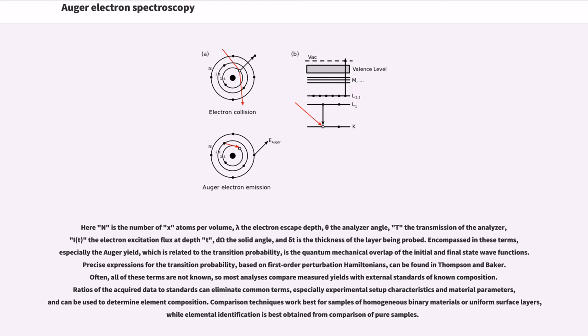Thus the total yield can be written as I = nλσa_A(cos θ/cos α)t(Ω)I_t(t)δt∫dΩ. Here n is the number of atoms per volume, lambda the electron escape depth, theta the analyzer angle, t the transmission of the analyzer, I_t the electron excitation flux at depth t, dΩ the solid angle, and δt is the thickness of the layer being probed. Encompassed in these terms, especially the Auger yield, which is related to the transition probability, is the quantum mechanical overlap of the initial and final state wave functions. Precise expressions for the transition probability, based on first-order perturbation Hamiltonians, can be found in Thompson and Baker. Often, all of these terms are not known, so most analyses compare measured yields with external standards of known composition. Ratios of the acquired data to standards can eliminate common terms, especially experimental setup characteristics and material parameters, and can be used to determine element composition. Comparison techniques work best for samples of homogeneous binary materials or uniform surface layers, while elemental identification is best obtained from comparison of pure samples.